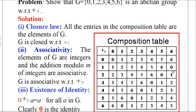Now consider the third row, headed by the number 2. 2+0=2, 2+1=3, 2+2=4, 2+3=5, 2+4=6. For 2+5=7: when 7 is divided by 7, the remainder is 0. Then 2+6=8; when 8 is divided by 7, the remainder is 1. Therefore we write 1 here.